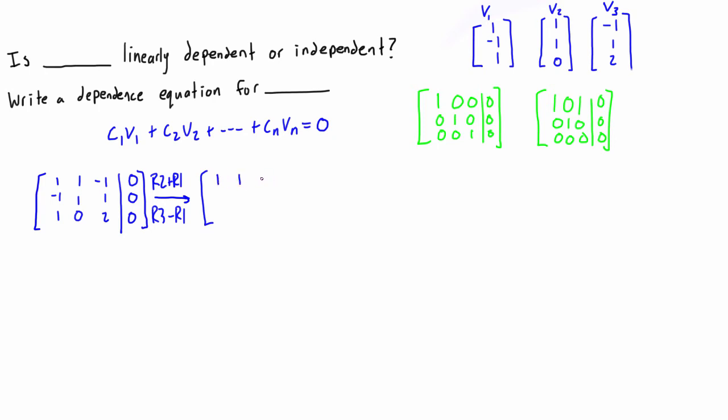So when we write that out, row one is unaffected, we get one, one, negative one and then our divider line over here. Row two plus row one, so negative one plus one is zero, one plus one is two, and one plus negative one is zero, and then zero plus zero is zero here. For R3 minus R1, so we have one minus one is zero, zero minus one is minus one, and two minus negative one is positive three, and that's all equal to zero.